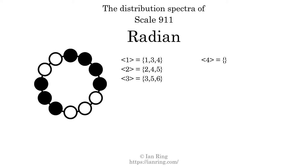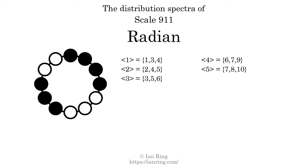The generic interval of five scale steps comes in three different specific interval sizes: seven semitones, eight semitones, and ten semitones. The spectrum width of this generic interval is three. The generic interval of six scale steps comes in three different specific interval sizes: eight semitones, nine semitones, and eleven semitones. The spectrum width of this generic interval is three.